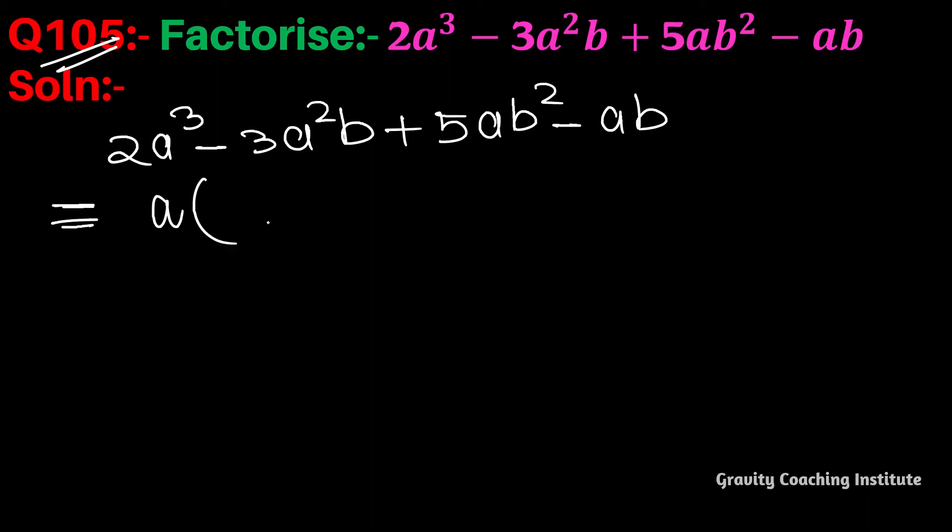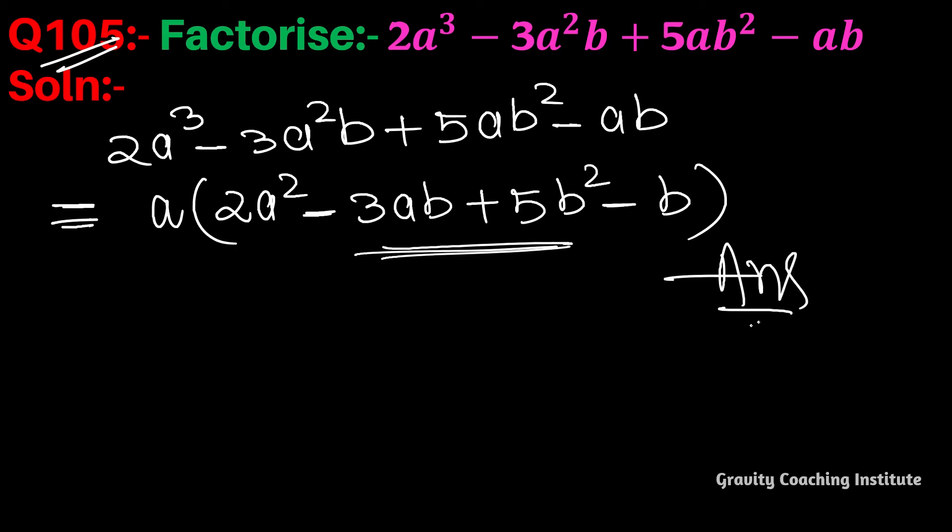Taking 'a' as common: the first term becomes 2a², the second term becomes 3ab, the third term becomes 5b², and the last term becomes b. So we get a(2a² - 3ab + 5b² - b), and this cannot be factorized further. This is the required answer.